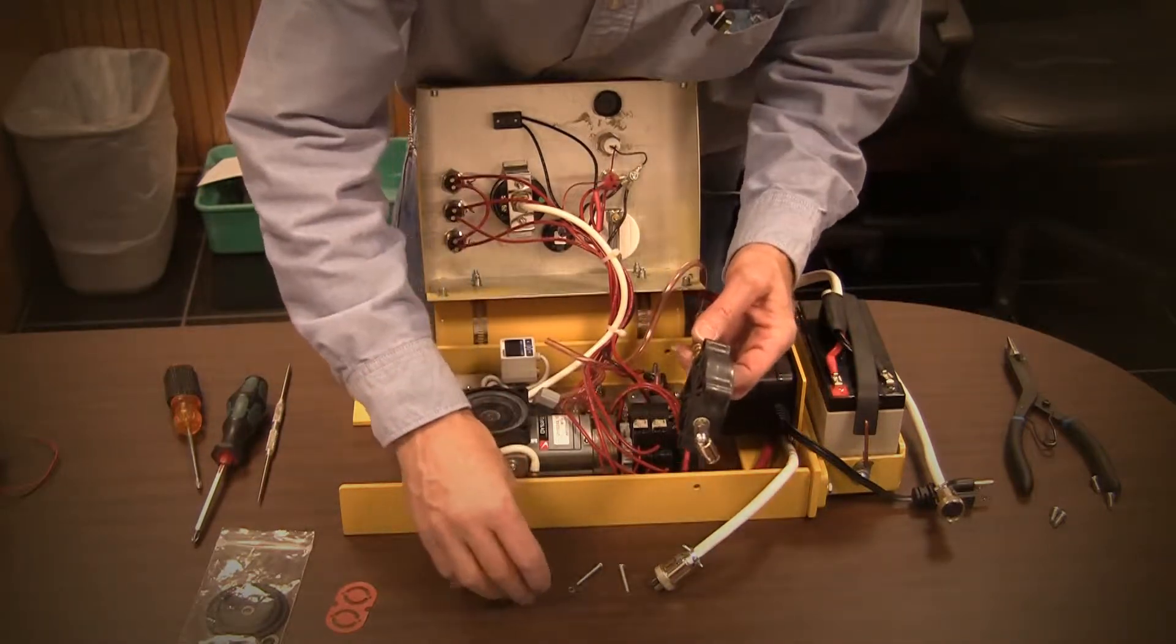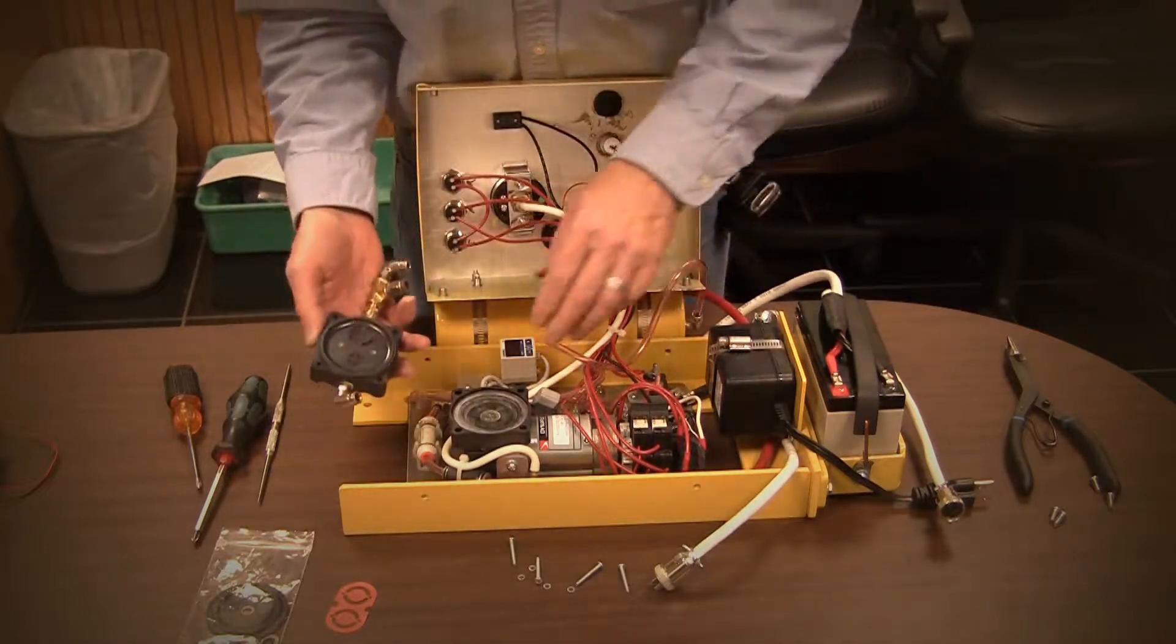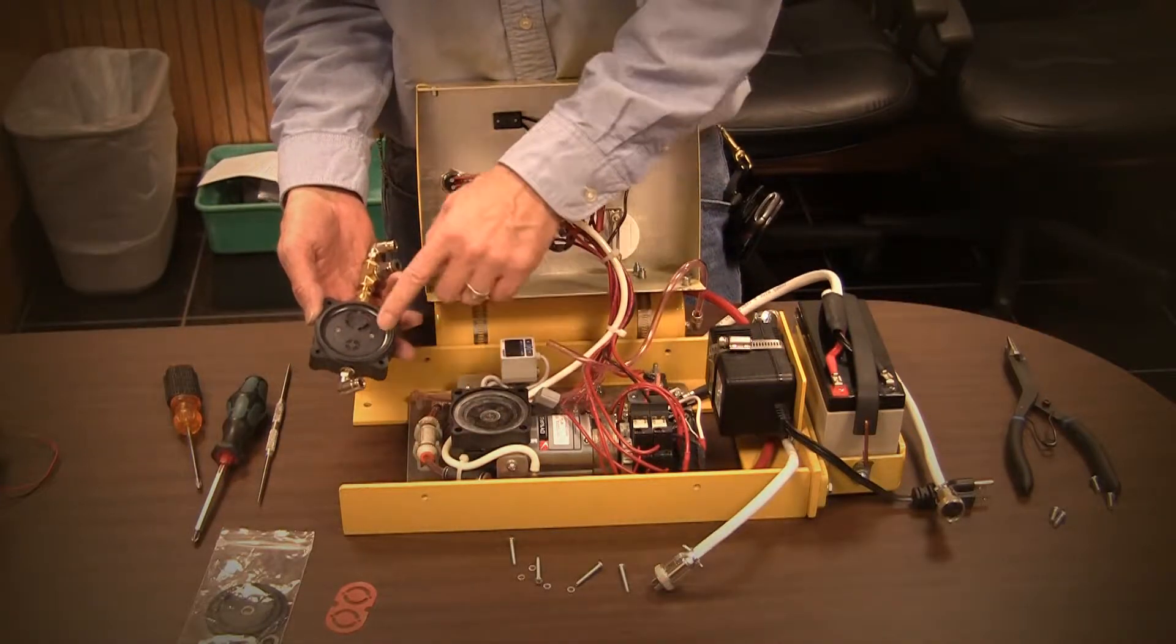Lift the pump head off the vacuum pump. This exposes the diaphragm and the valve plate located inside the pump head.